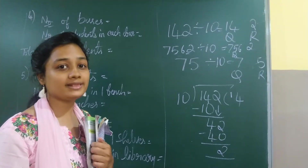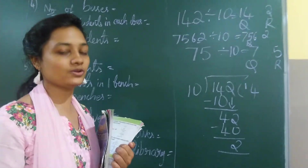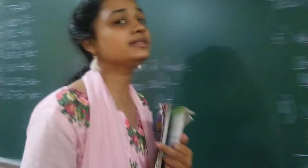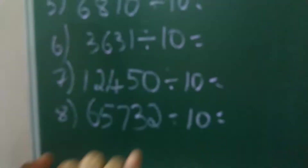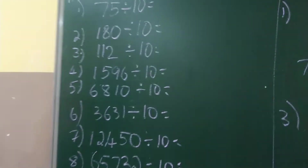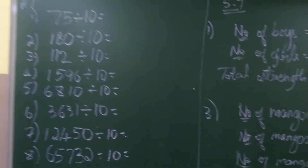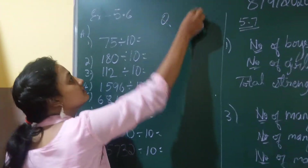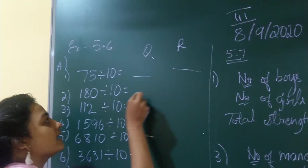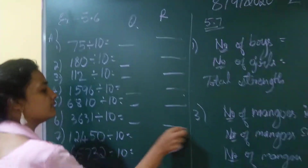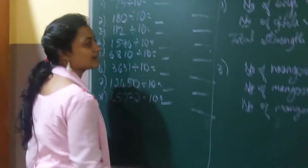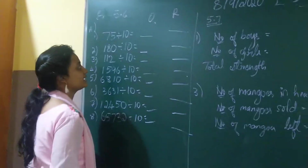So let us go to exercise 5.6 and write the answers using this trick. Take your textbook, exercise 5.6, page number 124. Take your pencils and let's start. I have two blanks — one for my quotient and one for my remainder.